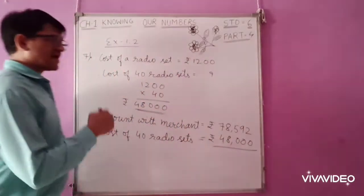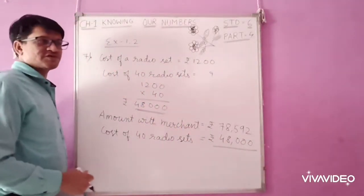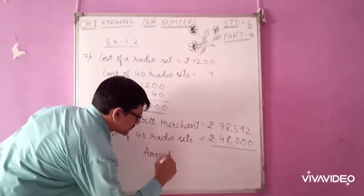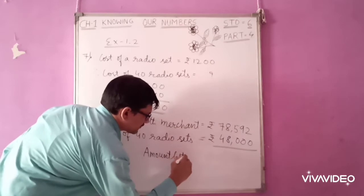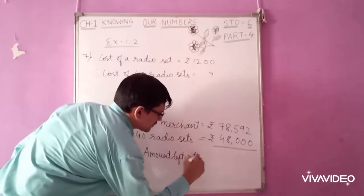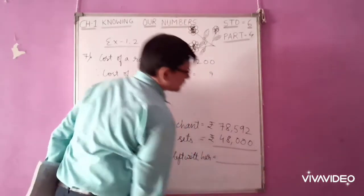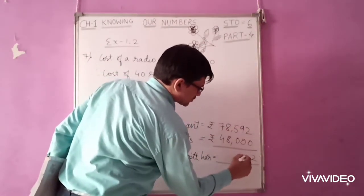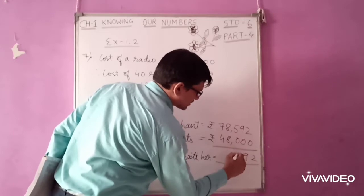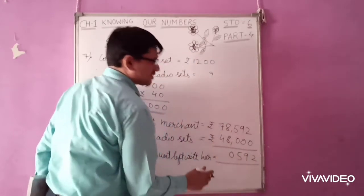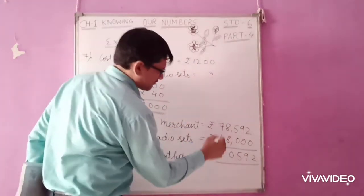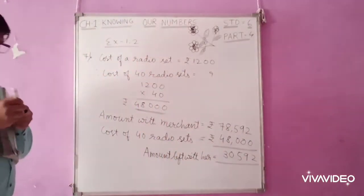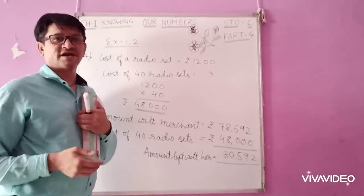Now, what is the amount left with her? The question is here, amount left with her is equal to... Now subtract. 2 minus 0 is 2. 9 minus 0 is 9. 5 minus 0 is 5. 8 minus 8 is 0. 7 minus 4 is 3. So amount with the merchant is Rs. 30,592.